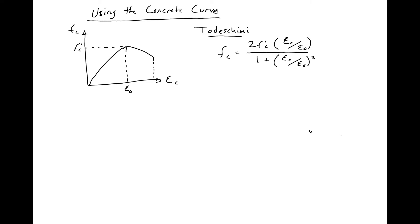Typically we'll be given an f prime c, and using f'c we'll need to find our modulus. We can just use any simple relationship. We'll just use 57,000 times the square root of f'c for this case.